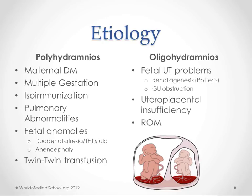With oligohydramnios, if you have complete renal agenesis, you can't get the fluid outside — you're gulping the amniotic fluid down but can't excrete it because you don't have kidneys, or you have some kind of genitourinary obstruction that's keeping the fluid from getting out. These types of things contribute to oligohydramnios.